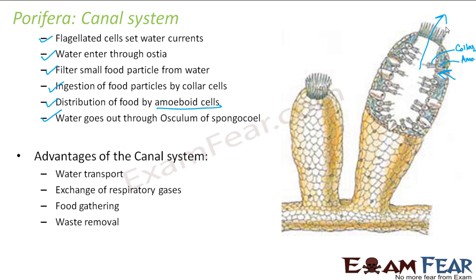The canal system provides several advantages: water transport, exchange of respiratory gases (dissolved gases come in with the water), food gathering, and waste removal. When water exits through the osculum, waste materials inside the body go out with it. So the canal system acts as an excretory system, a respiratory system, a circulatory system, and a digestive system all in one.